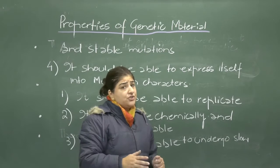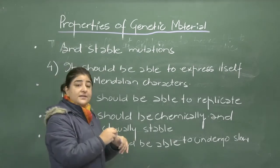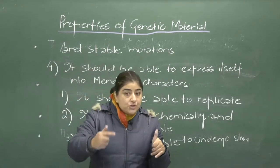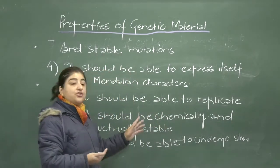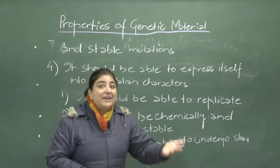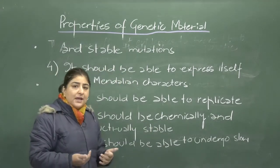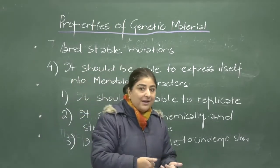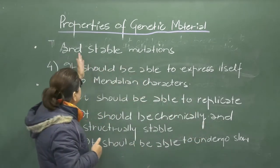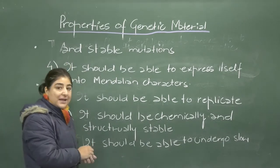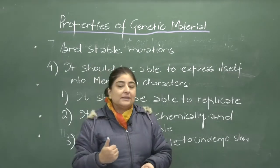The molecule that acts as a genetic material should possess some important characteristics. First, it should be able to replicate, meaning it should produce its carbon copies. Second, it should be chemically and structurally stable, meaning it should not change very frequently. Third, it should be able to undergo slow and stable mutations — mutations that are beneficial for participation in evolution. Fourth, it should be able to express itself in the form of Mendelian characters.